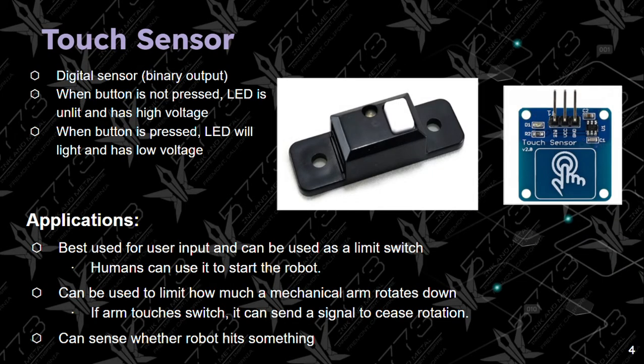The next sensor is the touch sensor. It is a digital sensor with a binary output. When the button is not pressed, the LED will not be lit and has high voltage. When the button is pressed, the LED will light up and will have low voltage.